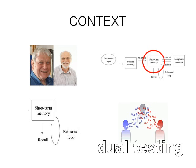Dual testing involves participants doing two tasks: one involves listening to one piece of information while at the same time doing another task involving a different piece of information. What dual testing showed up was that although people get confused if they have to take on board two pieces of visual information or two pieces of acoustic sound-based information, they don't seem to get confused if they have to take on board some visual information and some acoustic information at the same time. It's almost as if short-term memory handles sound and vision separately, and this is the insight that leads to working memory.